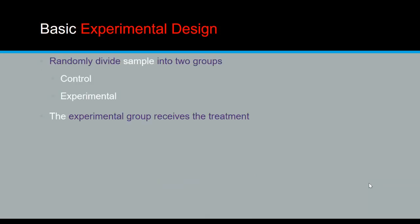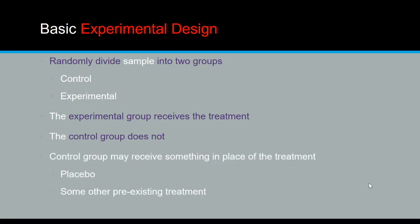As we look at our sample, we have two different groups: the experimental group will receive the actual treatment, and the control group will not. Remember the placebo effect — that's where the control group may think that something is happening to them if they don't know they are not actually receiving the treatment, and they may be convinced they have also seen the effect of it.